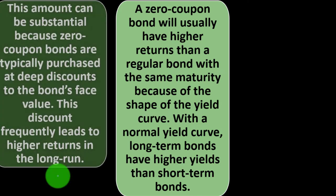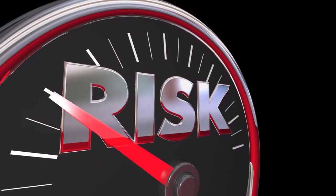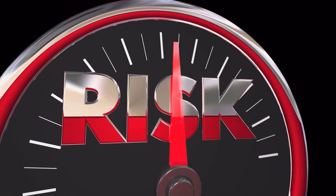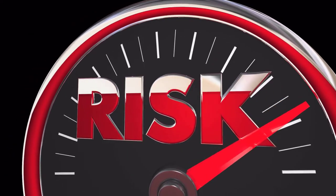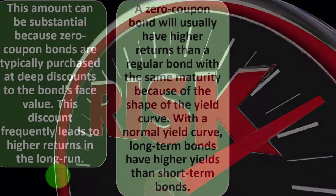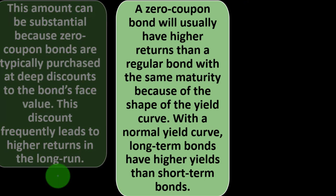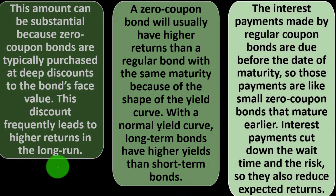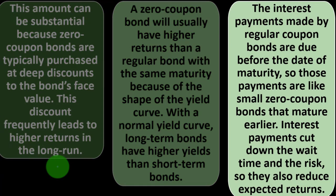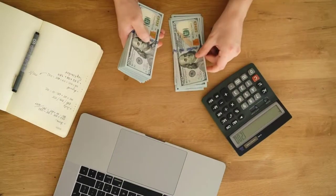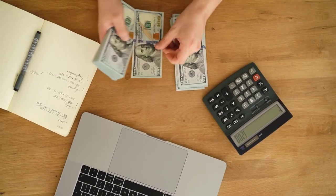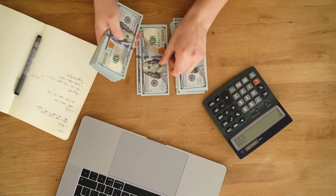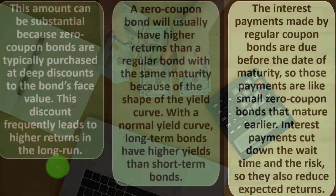You're taking on more risk because you're not getting payments throughout the time frame — you're getting paid in one lump sum at the end. So you would expect to want a bigger return in order to buy those bonds compared to bonds that pay you periodically. With a normal yield curve, long-term bonds have higher yields than shorter-term bonds. The interest payments made by regular coupon bonds are due before maturity, so those payments are like small zero coupon bonds that mature earlier — they cut down the wait time and the risk, and therefore also reduce expected returns.